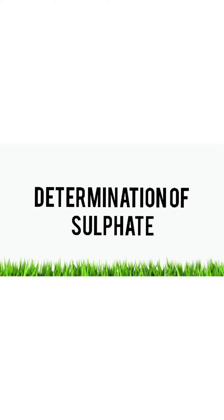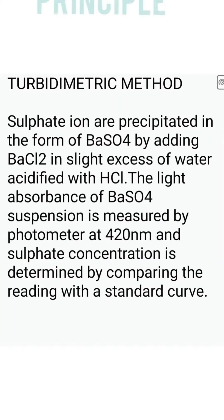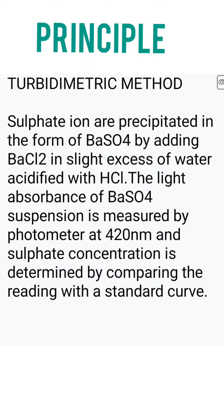Determination of Sulfate Principle: Sulfate ions are precipitated in the form of barium sulfate by adding barium chloride in slight excess to water acidified with HCl. The light absorbance of the barium sulfate suspension is measured by photometer at 420 nm, and sulfate concentration is determined by comparing the reading with a standard curve. This method is called the Turbidimetric method.